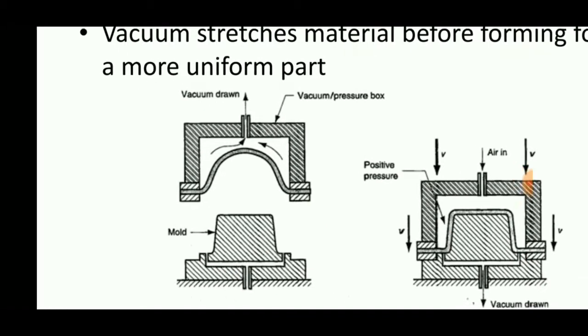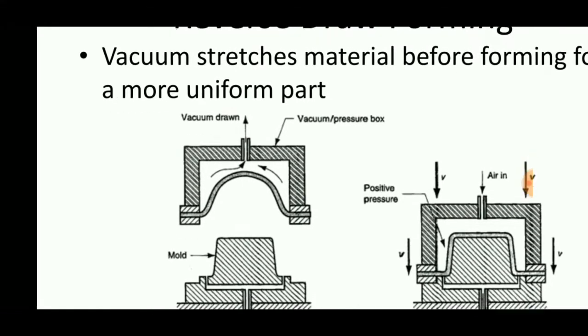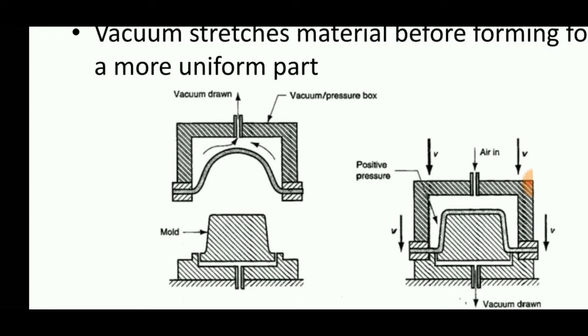In this process, a vacuum draws air from the upper surface of the sheet metal to deform it, giving the sheet a softer nature. Then the upper part moves down into the bottom part.